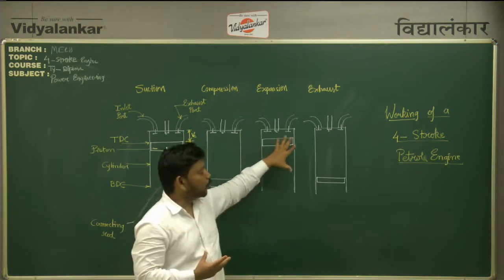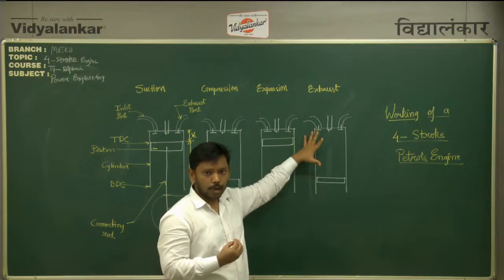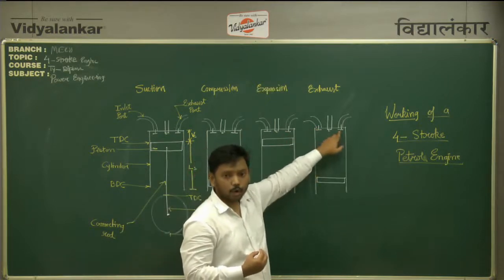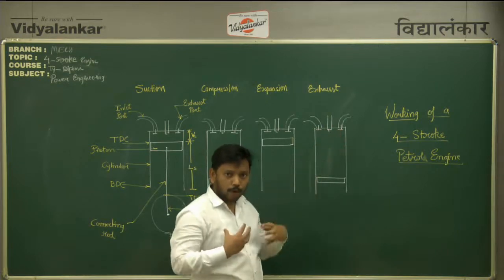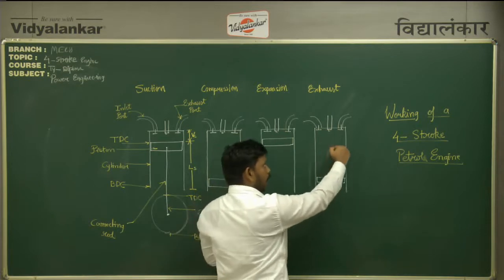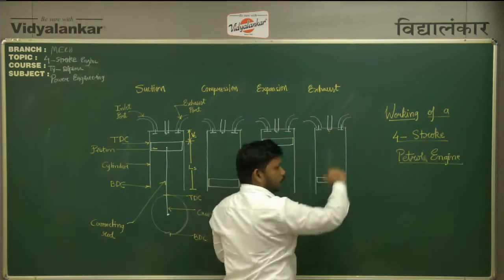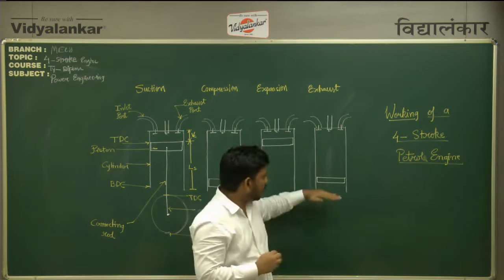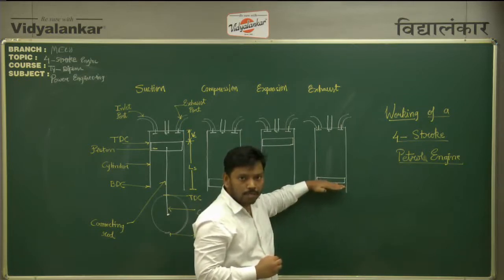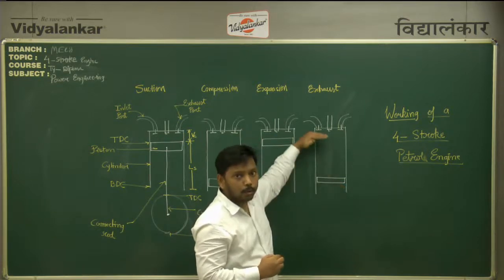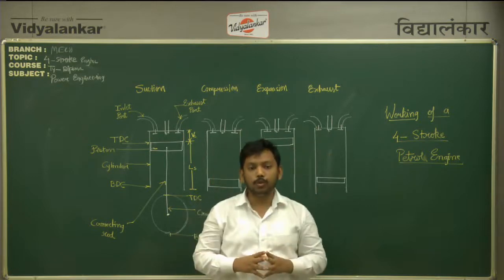Followed by the expansion stroke, we will talk about the exhaust stroke. As soon as the piston reaches the bottom dead center, we start opening the exhaust valve. Once the exhaust valve is open, all the hot gases or burnt gases start moving out from the cylinder into the atmosphere, and the pressure inside the piston cylinder mechanism starts decreasing. Slowly we raise the piston from the bottom dead center to the top dead center, and this way all four strokes of an IC engine are completed.